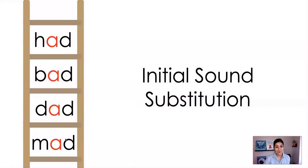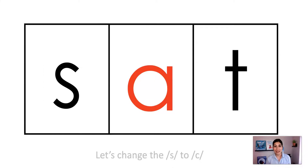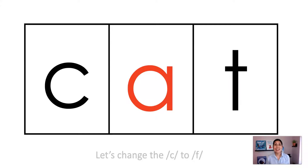Here's an example of how I would use word ladders in my classroom. I would start with a word ladder where I'm only changing the initial sound. I would show them the word bat. Let's change the B to S — what word did we make? Sat. Let's change the S to K. Cat. Very good.